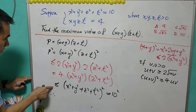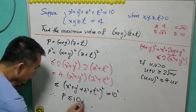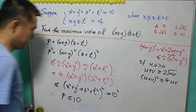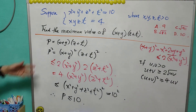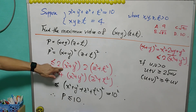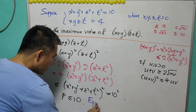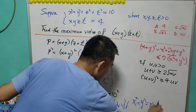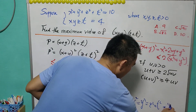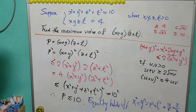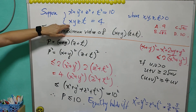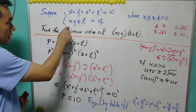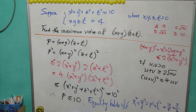So right now, p² ≤ 100, meaning p ≤ 10. Can we say the answer is d? We need to check whether equality holds. Equality holds if and only if x = y and z = t, and also x² = y² = z² = t² = 10/4 = 5/2. But with this condition, we are unable to get the product xyzt = 4. Therefore, d cannot be the answer.